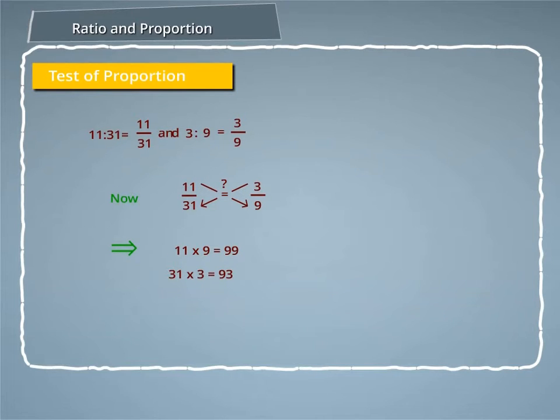11 into 9 is equal to 99 and 31 into 3 is equal to 93. 99 is not equal to 93.